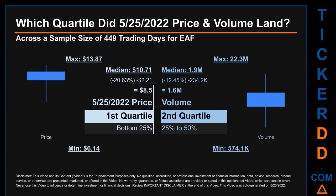Hello, my name is Maria. Which quartile did May 25, 2022 price and volume land in across a sample size of 449 trading days? The maximum end-of-day price for EAF was $13.87 while the minimum was $6.14. Within that price range, May 25, 2022's price of $8.50 landed within the first quartile, meaning it was within the bottom 25% of all sampled end-of-day prices.